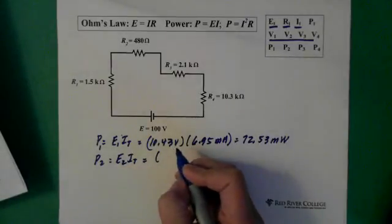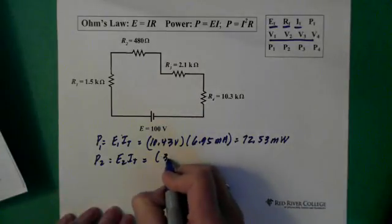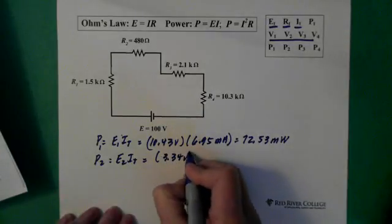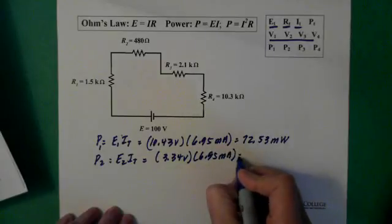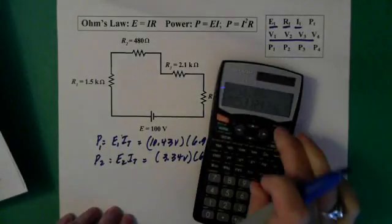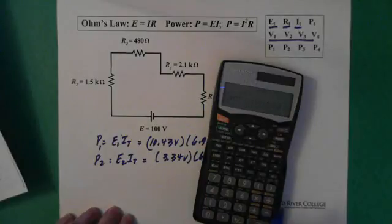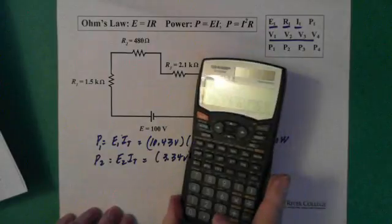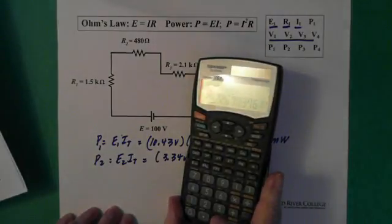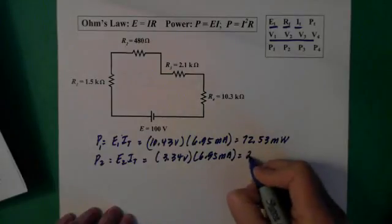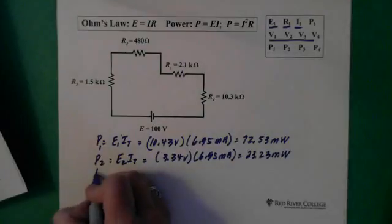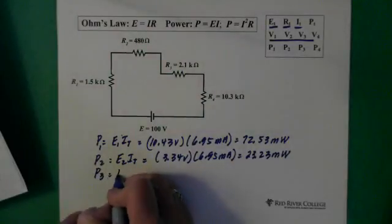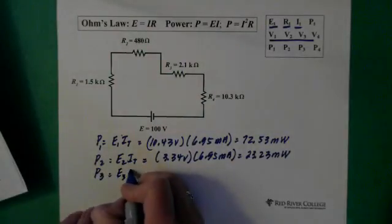Power 2, voltage 2 times the total current. Voltage 2 was 3.34 times our current 6.95 milliamps equals 23.23 milliwatts.